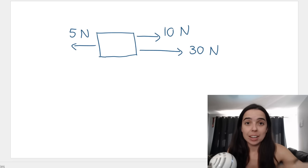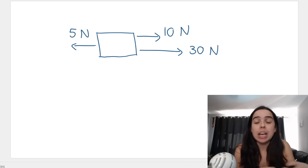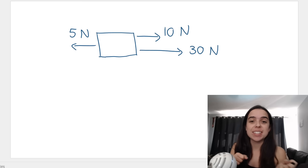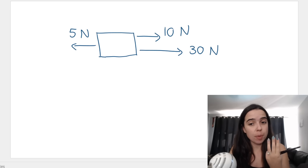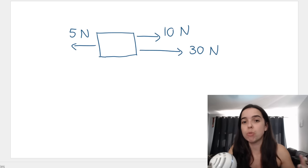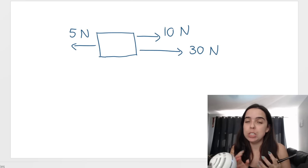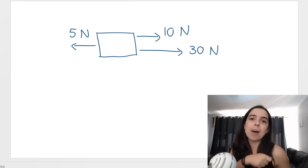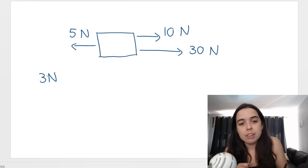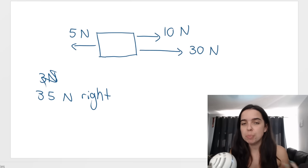For example, if two people are pulling a box to the right with 10 Newtons and 30 Newtons, and one person is opposing them pulling 5 Newtons to the left, the net force is the overall force. So 10 plus 30 gives 40 Newtons to the right, minus 5 Newtons to the left, gives 35 Newtons to the right. That was the net force — the overall force. It's the same principle, but this time with work.